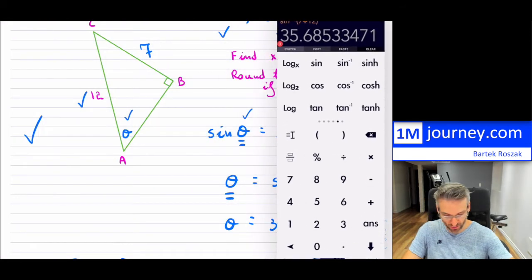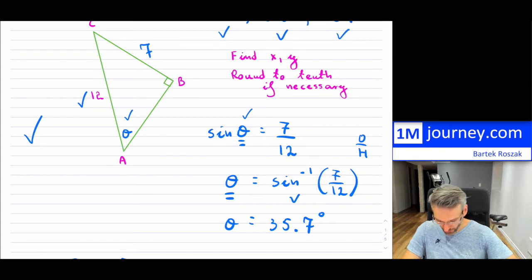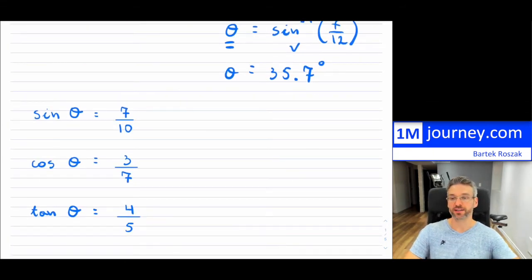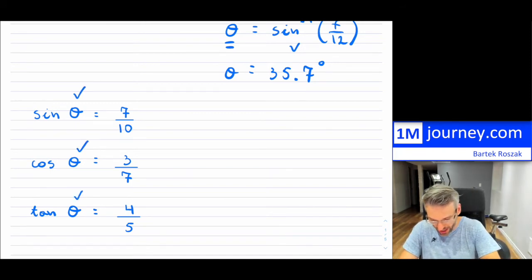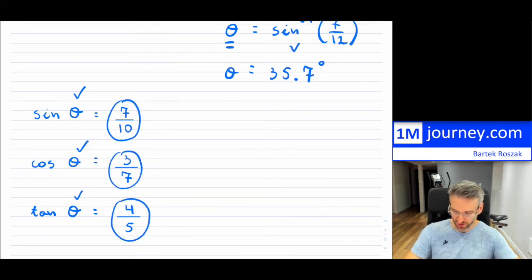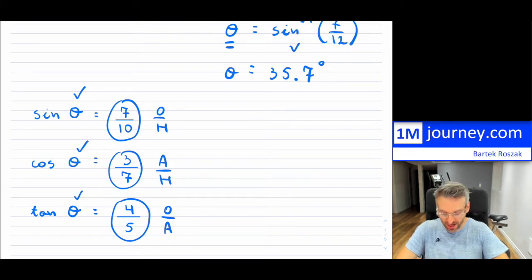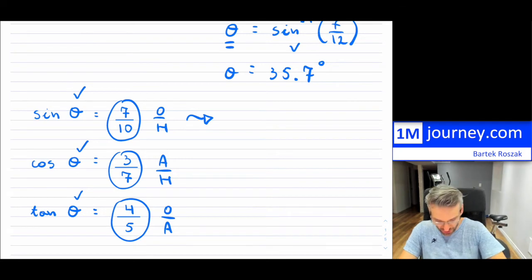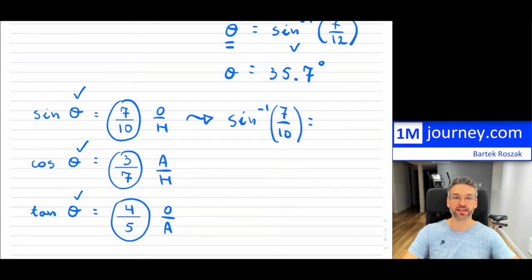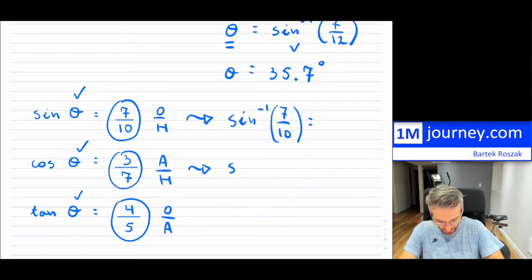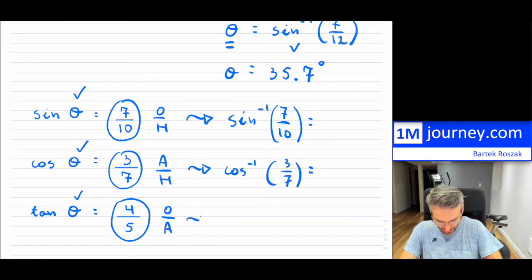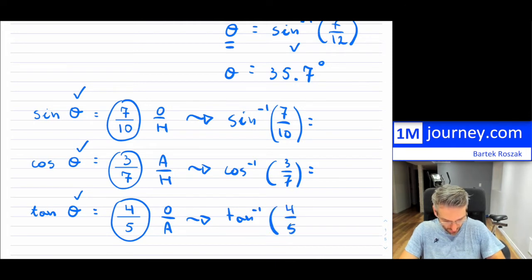We can find any angle as long as we know some of the sides. Here are some practice examples using the ratios. Sine is opposite over hypotenuse, cosine is adjacent over hypotenuse, and tangent is opposite over adjacent. We can always find the angles using the inverse. For example, sine inverse of 7 over 10, cosine inverse of 3 over 7, and tangent inverse of 4 over 5.